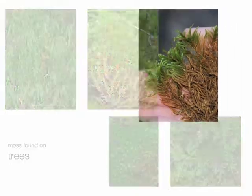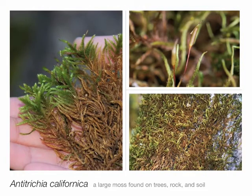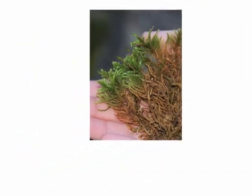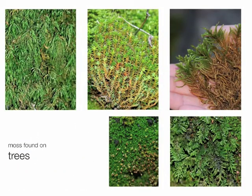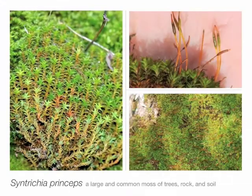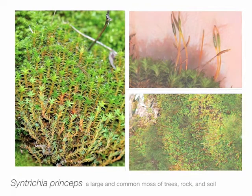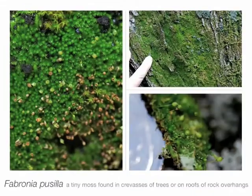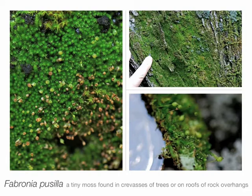Next we have Antitrichia californica, which can also be found on soil and rock. It is a large moss, very uncommon south of the Sierra. Our next example is a member of the family Pottiaceae — this is Syntrichia princeps, and the leaf has these hyaline awns. Moving on to the upper sections of the trunk, the next moss is very commonly found in crevices where the main branches split.